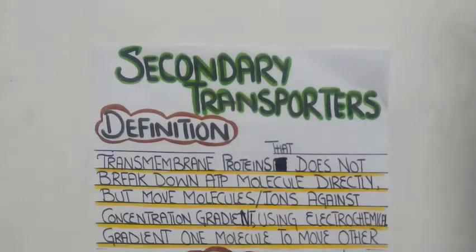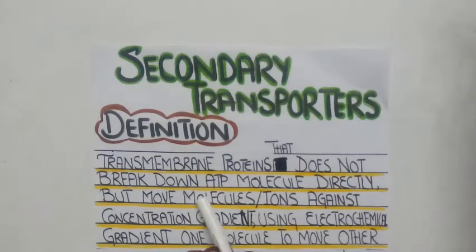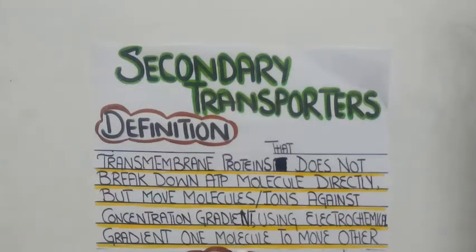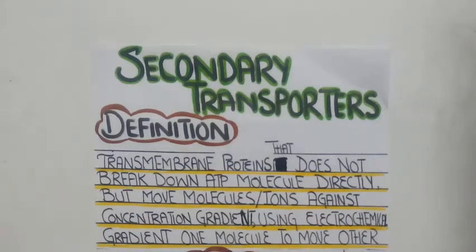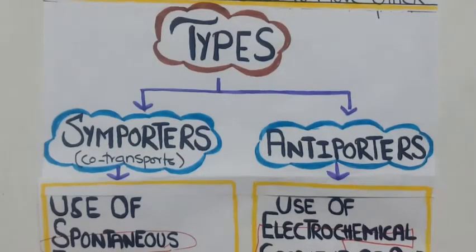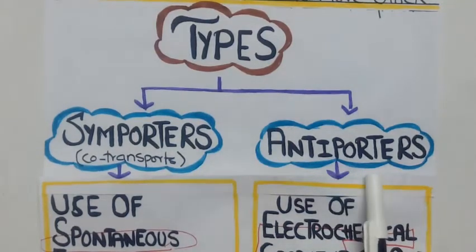Secondary transporters are transmembrane proteins that aid in secondary active transport. They do not break down ATP molecules directly to get energy for transport, but they move molecules or ions against the concentration gradient using the electrochemical gradient of one molecule to move another molecule. These secondary transporters are of two types: symporters and antiporters.